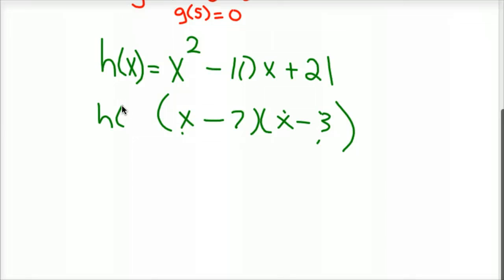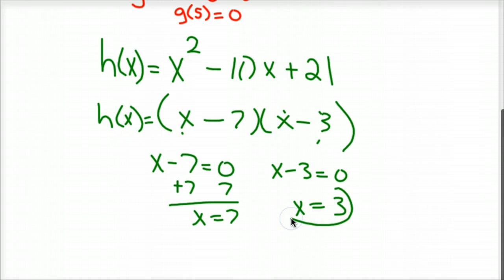If either one of those were plugged into that original function... how I found that is I set each to 0. These are called the linear factors. If you set both those to 0 here, you'd have to add 7. So x = 7 and x = 3. Now I picked a nice one that factors. Some of them don't factor, and you'd have to use the quadratic formula. You could have also found the same thing with x = (-b ± √(b² - 4ac)) / 2a. You don't have to factor them, you could use the formula. There's other methods as well. But just to save time, this is mainly to show you what a root is.